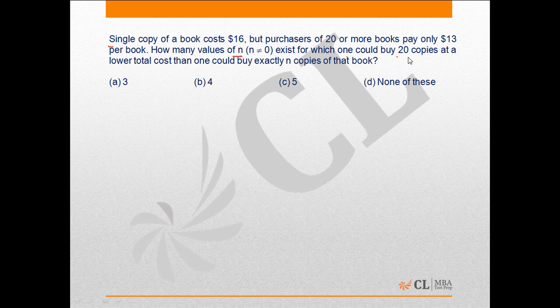for which one could buy 20 copies at a lower total cost than one could buy exactly n copies of that book? Okay, so this means that n has to be less than 20. This is understood. Now let's find out the total cost when you buy 20 copies.